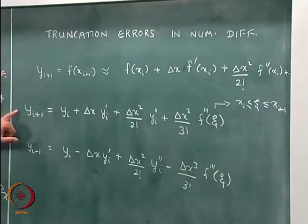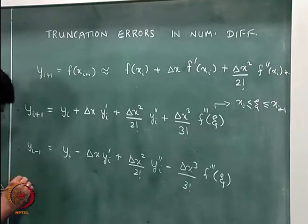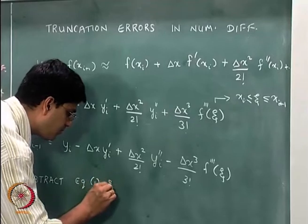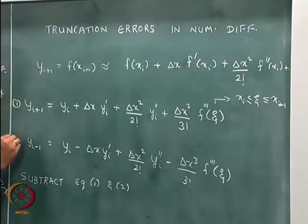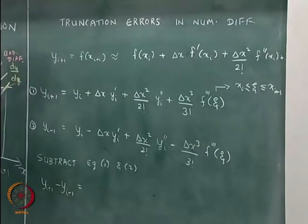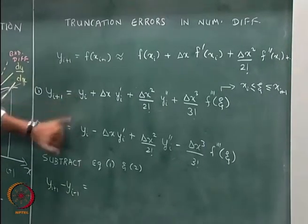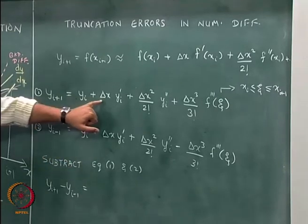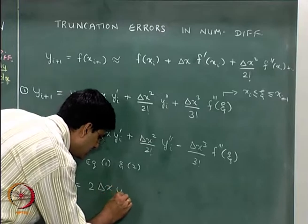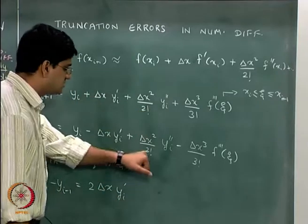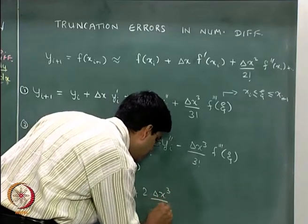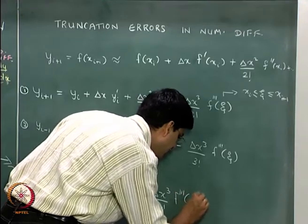Now, what we will do is subtract these two equations. If we subtract these two equations, we will get y(i+1) minus y(i-1) is equal to 2 times delta x multiplied by y'(i). The squared terms cancel, and we are left with plus 2 times delta x cubed by 3 factorial multiplied by f triple dash of zeta.